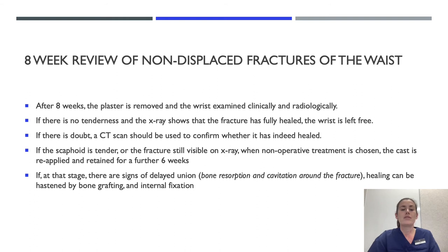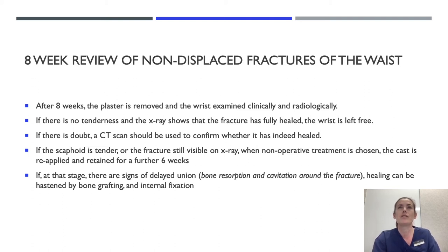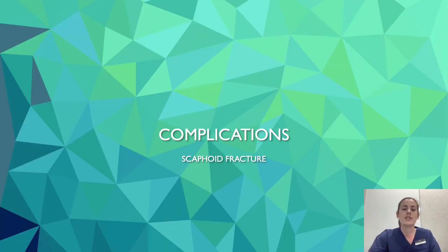For a non-displaced fracture of the waist with a plaster applied: after eight weeks the plaster is removed and the wrist examined clinically and radiologically. If there is no tenderness and the X-ray shows the fracture is fully healed, the wrist is left free. If there is doubt, a CT scan should be used to confirm healing. If the scaphoid is tender or the fracture is still visible on X-ray and non-operative treatment is chosen, the cast is reapplied for a further six weeks. If signs of delayed union such as bone resorption and cavitation are present, healing can be hastened by bone grafting and internal fixation.